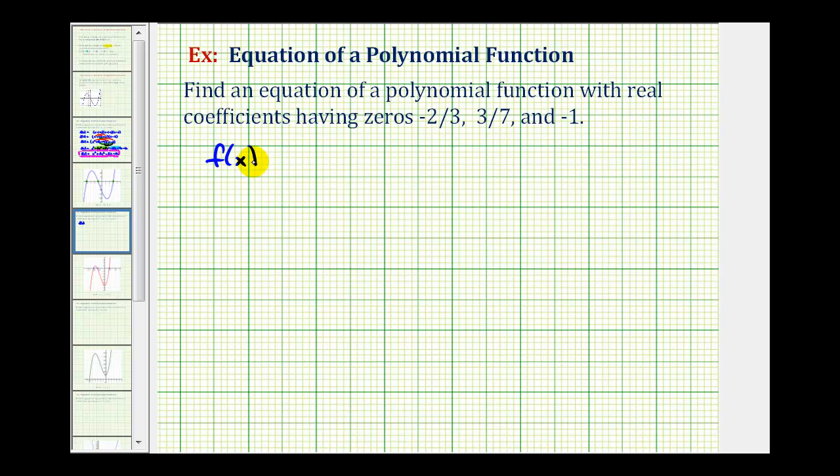then our function f(x) would have to have a factor of x minus negative 2/3, which we can write as (x + 2/3). It would also have a factor of (x - 3/7). It would also have a factor of x minus negative 1, or (x + 1).